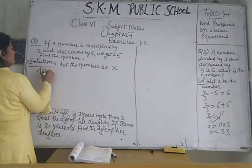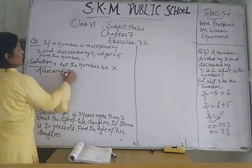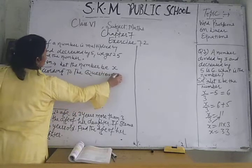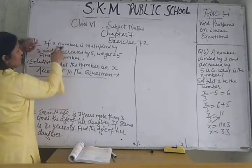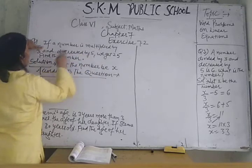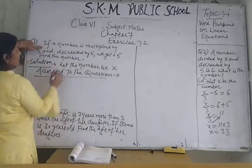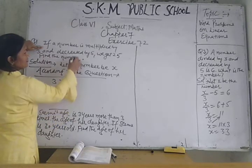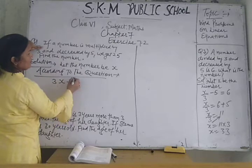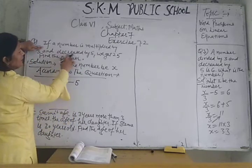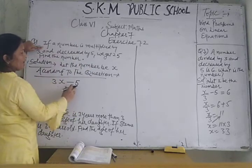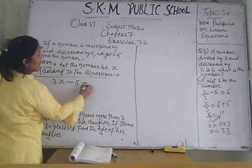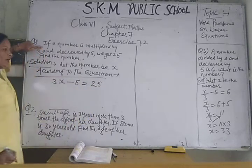According to the question, if a number x is multiplied by 3, that is 3 into x, and decreased by 5 means you subtract 5 from 3 times the number. Then you get — that is equal to 25.